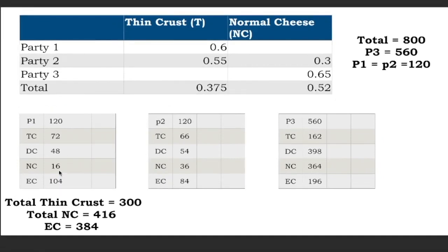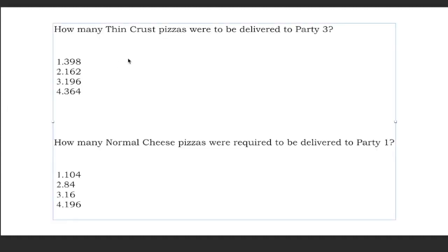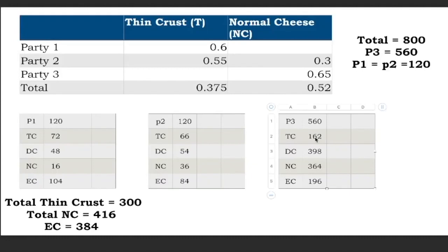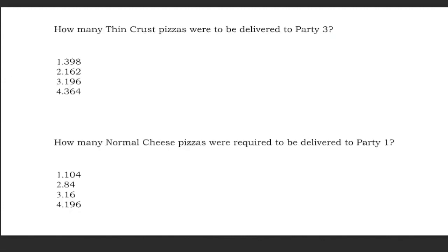The table is now as complete as possible without further information — the distribution of thin crust between cheese types for each party is still unknown. Moving to the questions: Question 1 asks how many thin crust pizzas were delivered to party 3. Looking at the table, thin crust for party 3 is 162 — so the answer is option 2.